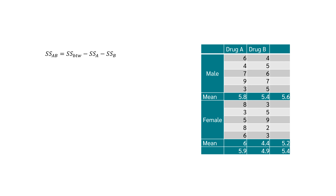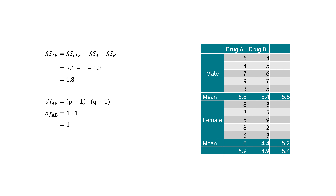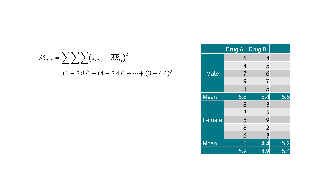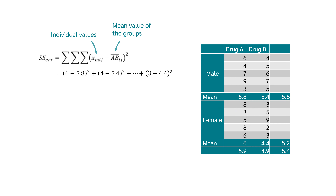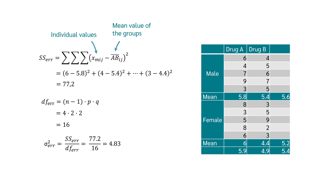The sum of squares for the interaction is obtained by taking SS between groups minus SS of A and SS of B. The degrees of freedom equal 1, giving an interaction variance of 1.8. For the error sum of squares, we subtract the mean of each group from the respective individual group values — subtracting 5.8 from the first group, 5.4 from the second, 6 from the third, and 4.4 from the fourth. This gives SS error = 77.2 with 16 degrees of freedom and error variance = 4.83.